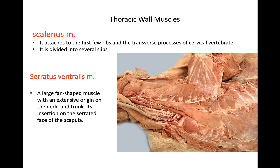Starting with the scalenius muscle — as we can see, it is attached to the first few ribs and the transverse processes of the cervical vertebra. You can see the scalenius muscle here; it is divided into several slips, meaning it has different parts or different segments rather than being just one part.